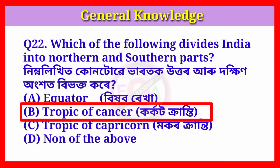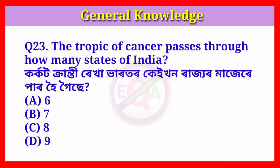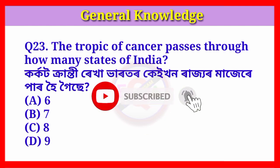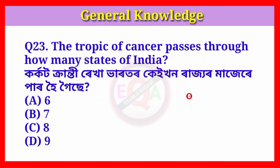Tropic of Cancer. Question number twenty-three: The Tropic of Cancer passes through how many states of India? The Tropic of Cancer line passes through how many states? Answer: Option C, Eight — it passes through eight states.